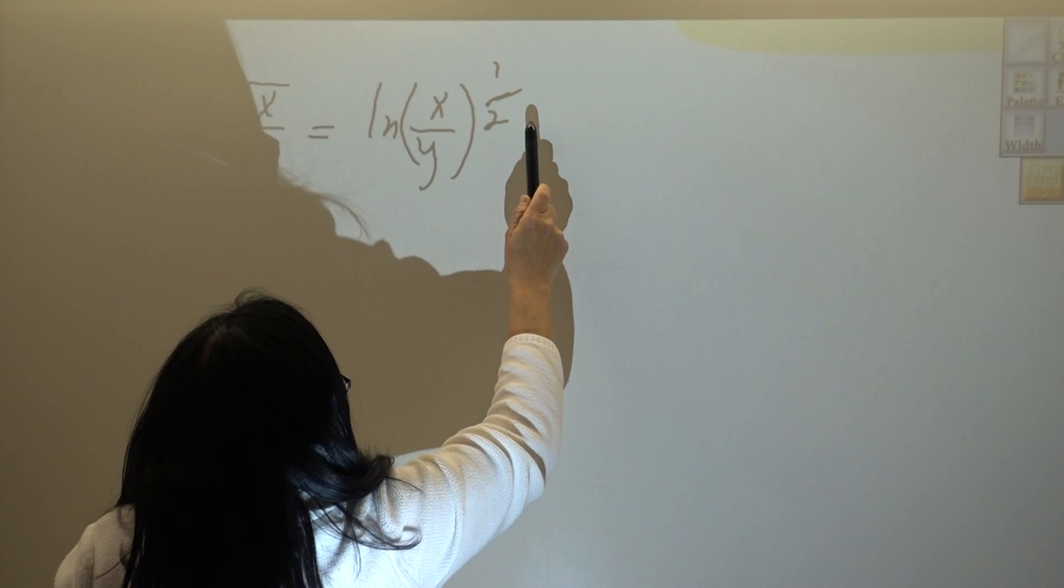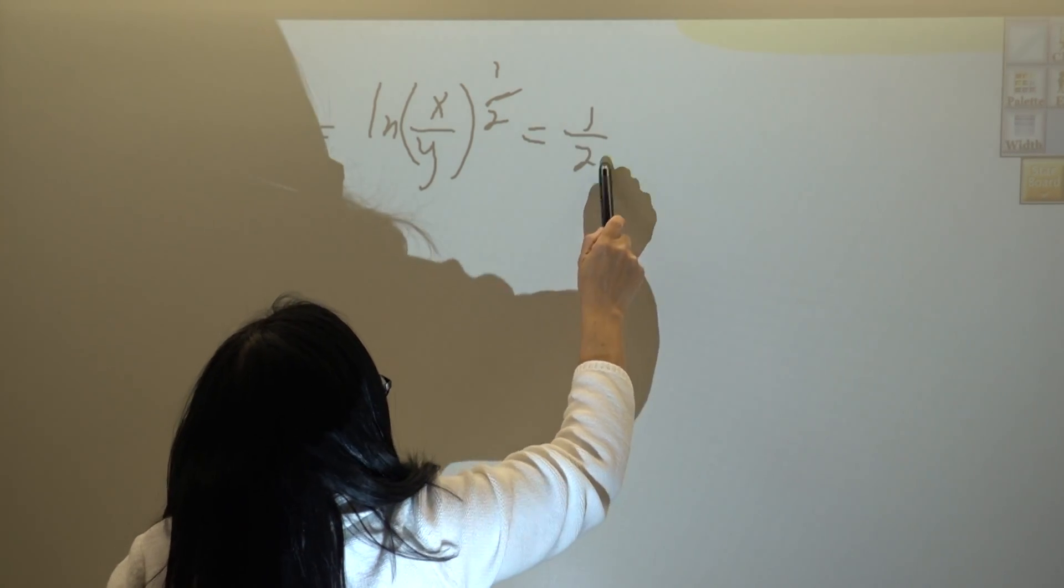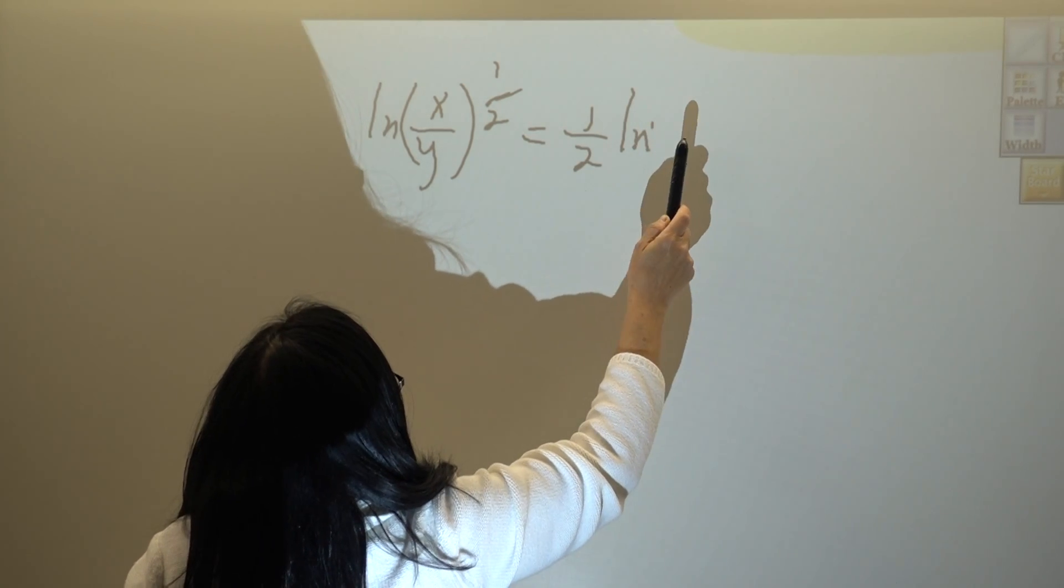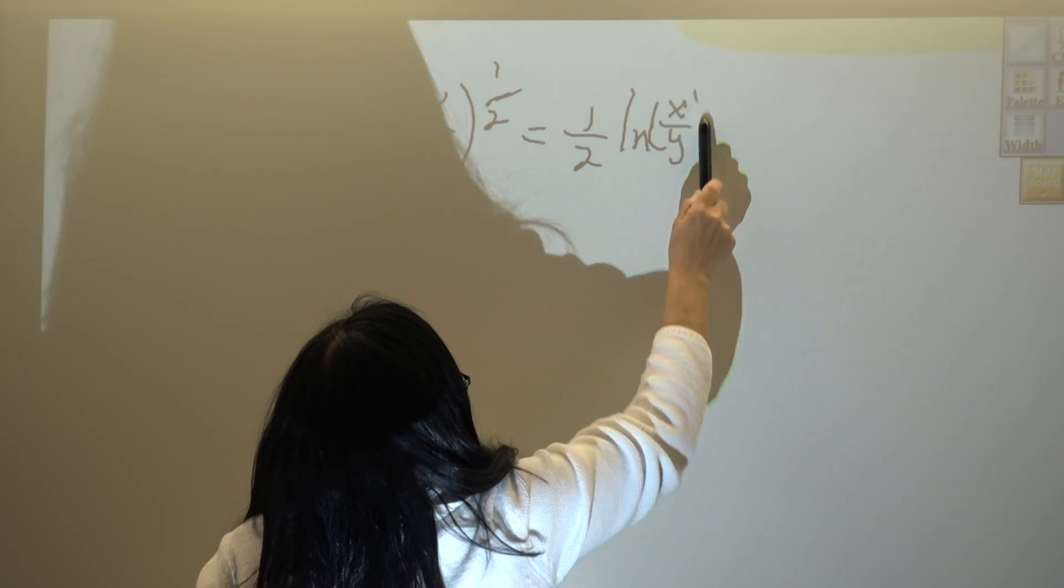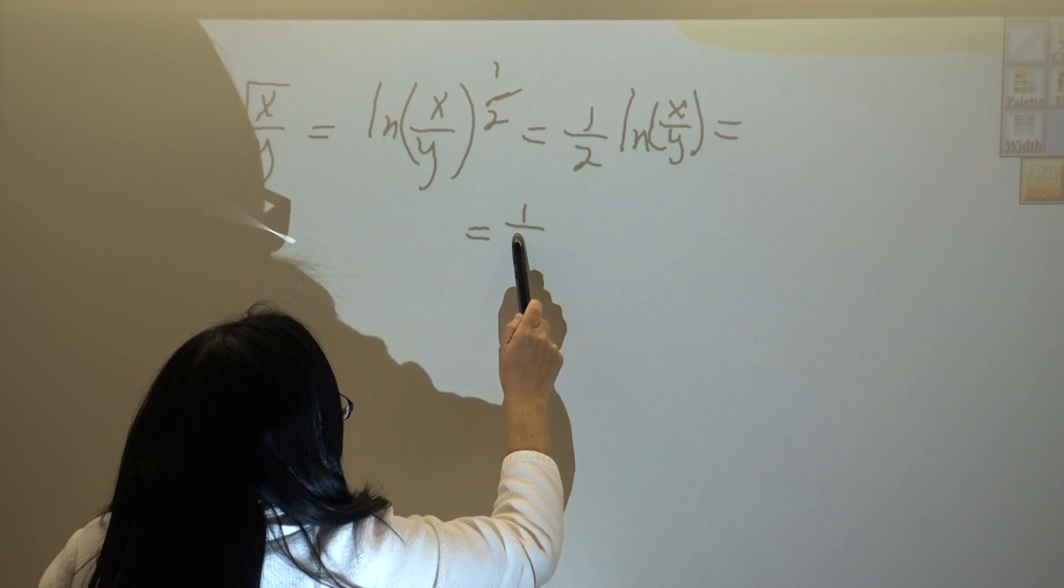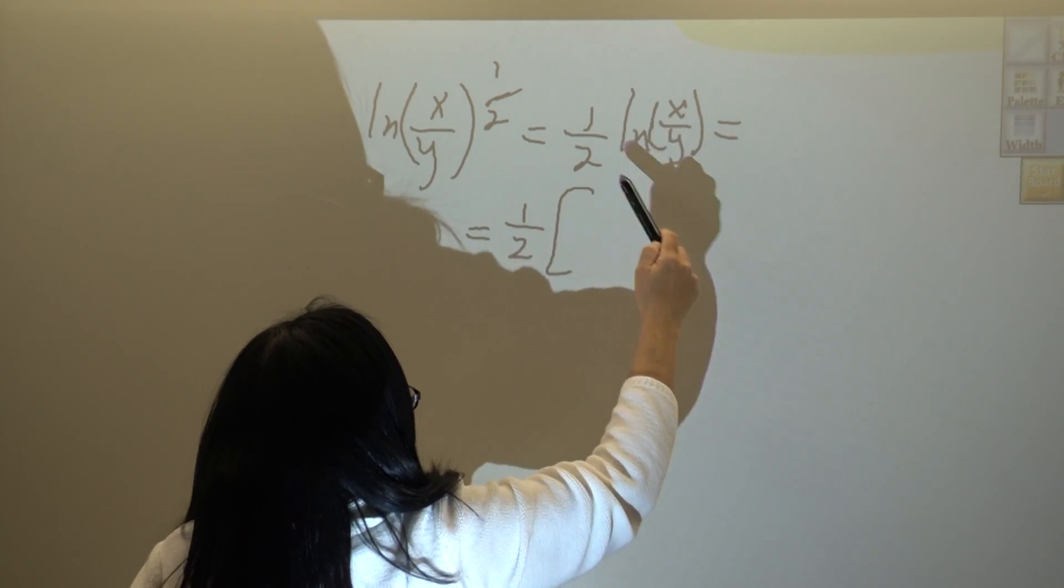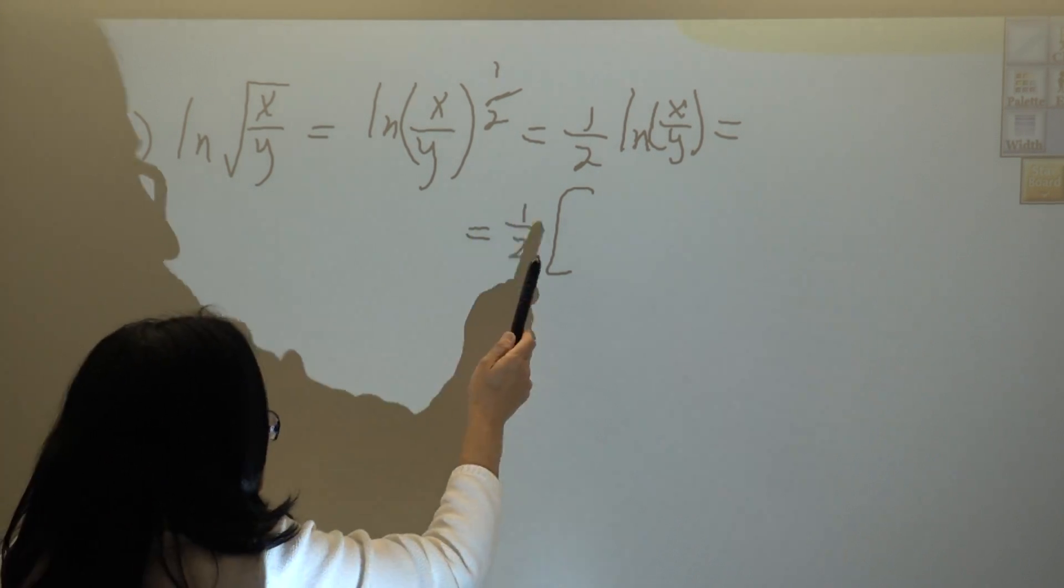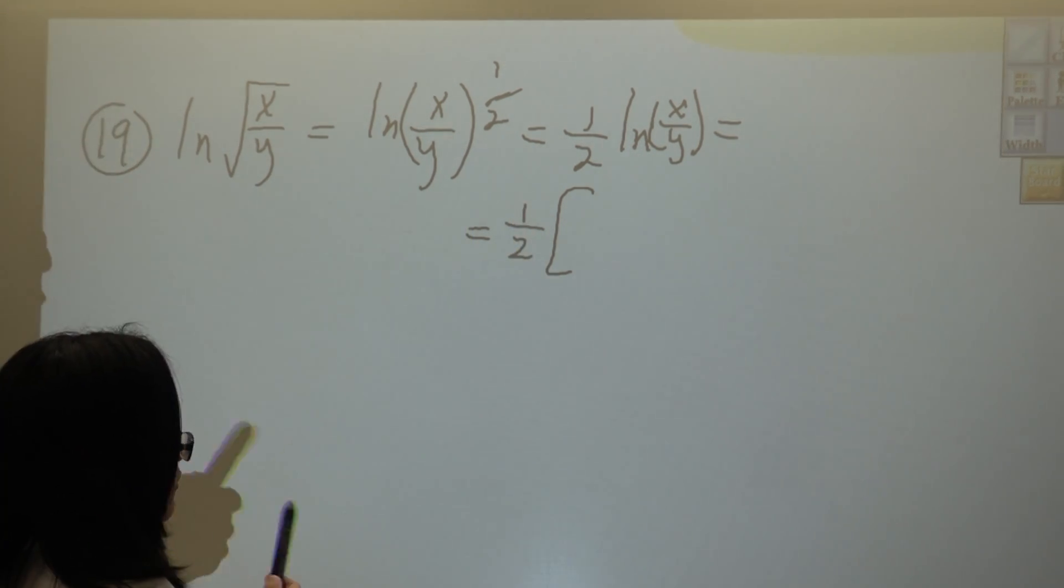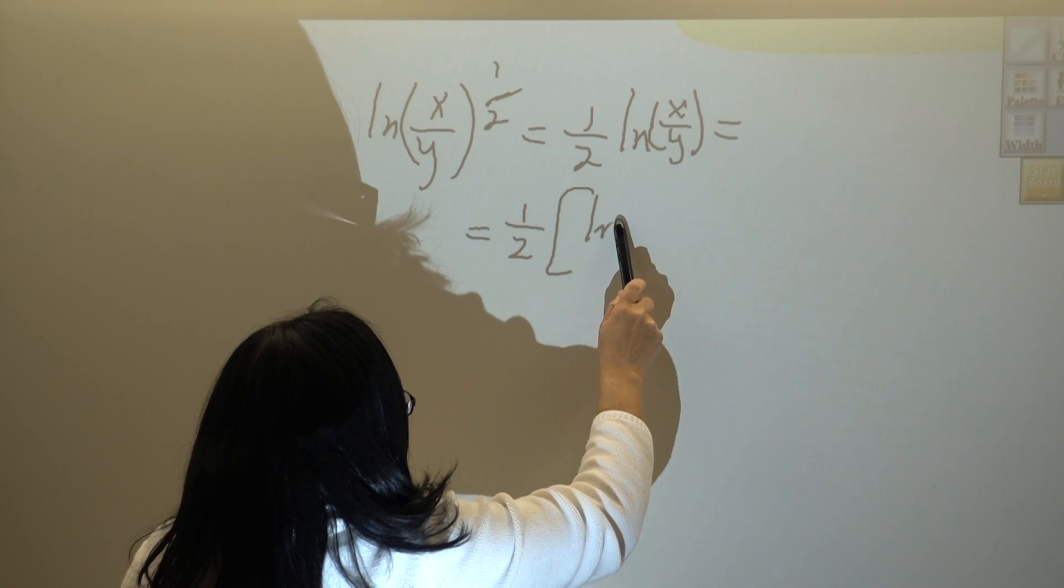Then equals one half natural log of x over y. When you develop this, it's the difference of two expressions, so we need to insert parentheses: natural log of x minus natural log of y.